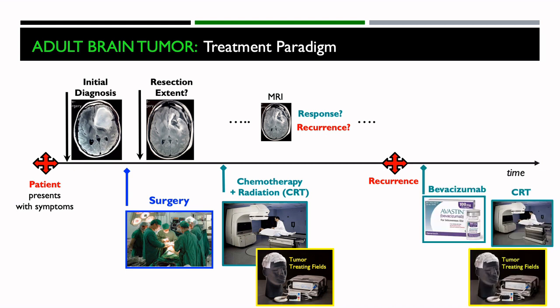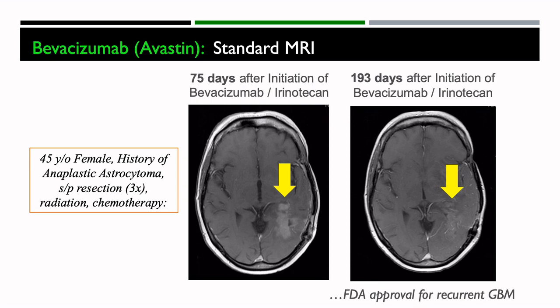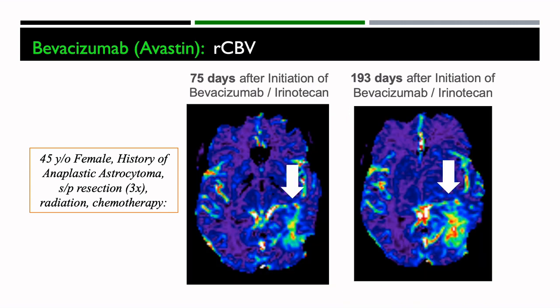Now, what about at recurrence? At recurrence there are several different treatment options including bevacizumab or Avastin, chemoradiation therapy, and tumor treating fields, and standard MRI is used to assess response or progression. Here's an example of a patient with a recurrent glioblastoma or anaplastic astrocytoma treated with bevacizumab, showing images at 75 days and 193 days after starting treatment. If you look at the standard MRI, it looks like they're definitely improving because the area of enhancement is decreasing. However, if you look at our RCBV maps, we see a different story — there's a growing degree of vascularity — which was actually more consistent with this patient's clinical course, as sadly she expired just a couple of months after the exam.